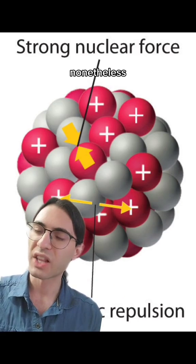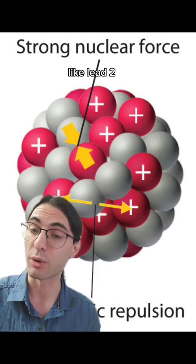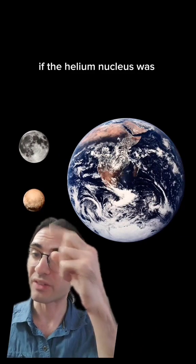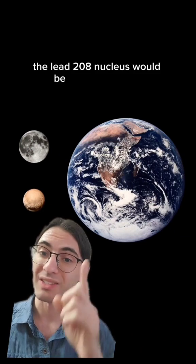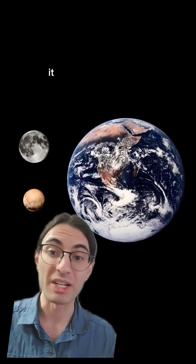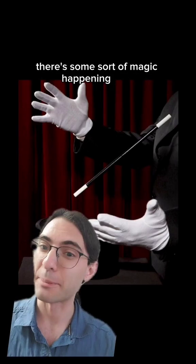Eventually, the nucleus just falls apart. Nonetheless, we're left with the mystery of how is it that huge elements, like lead 208, can be stable, yet have so many protons and neutrons. For comparison, if the helium nucleus was the size of Pluto, the lead 208 nucleus would be the size of Earth. And yet, lead 208 is not radioactive at all, it is completely stable. And you would be right for thinking that there's some sort of magic happening here.